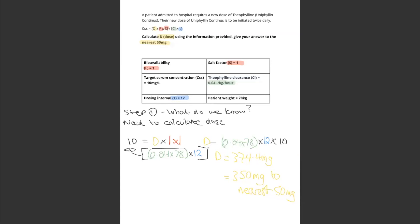The dose is equal to 0.04 times 78 times 12 times 10. That is equal to 374.4. Our answer needs to be to the nearest 50 milligrams, so therefore our answer for this one is 350. I hope the colour coding helps you understand the question. More questions coming soon — thanks guys, see you soon, bye.